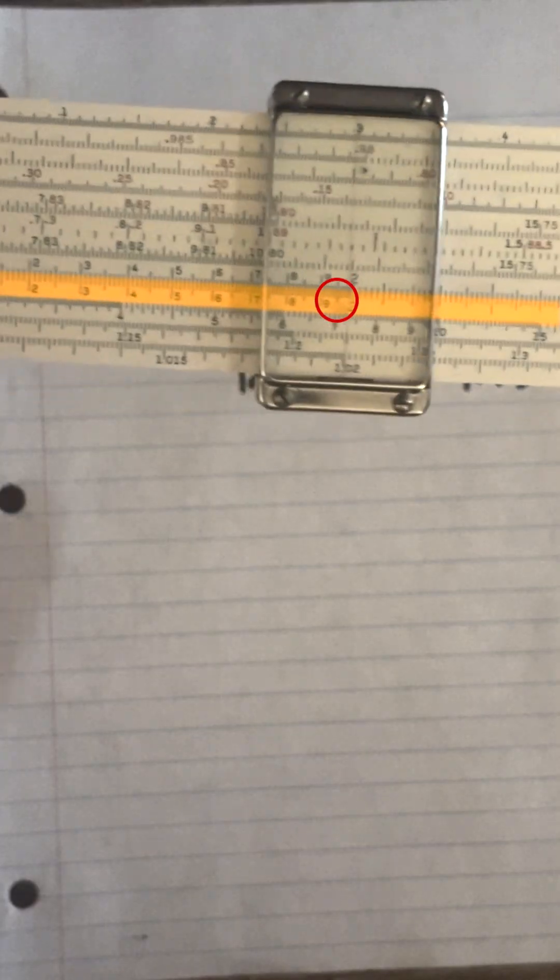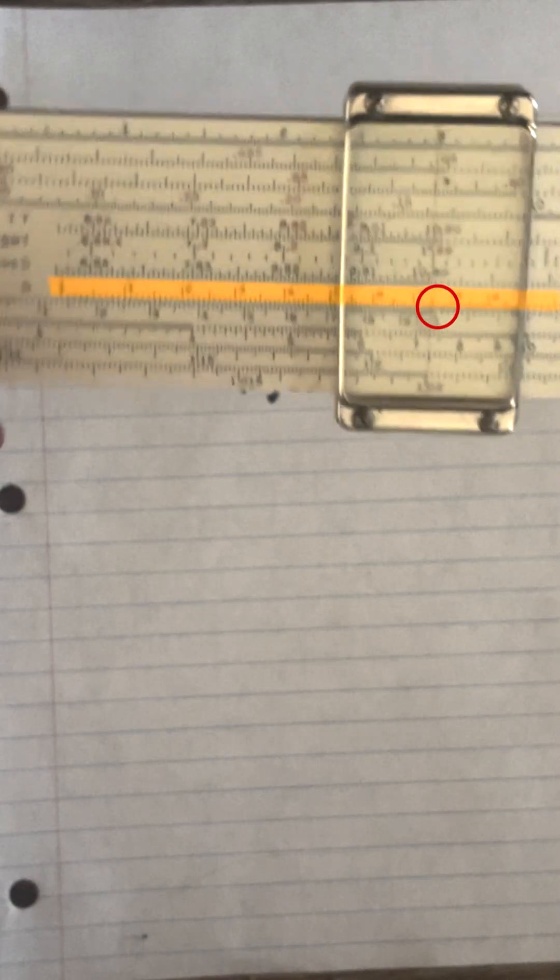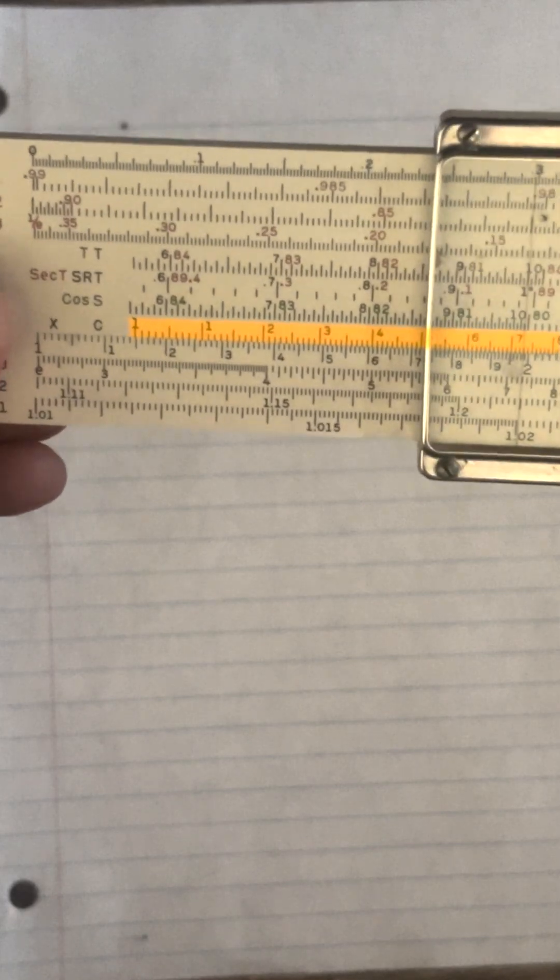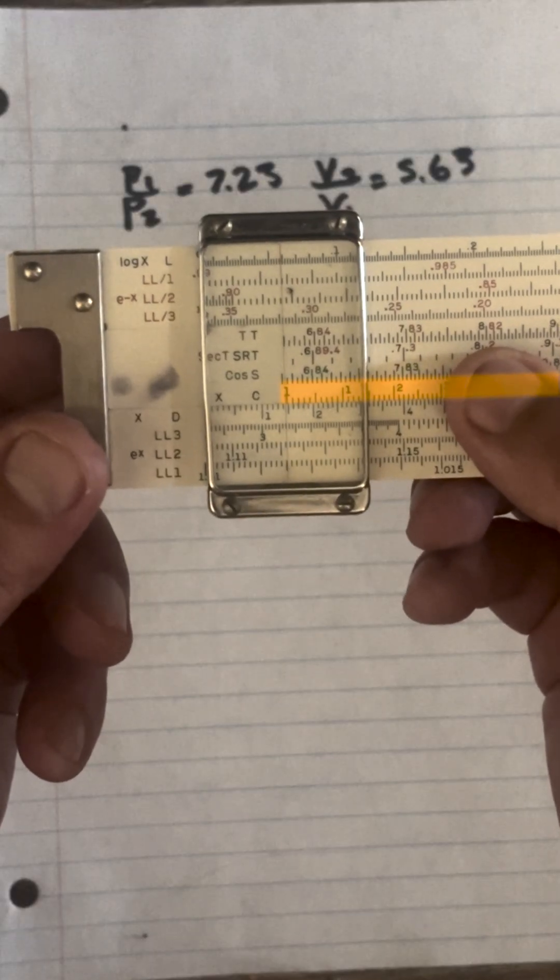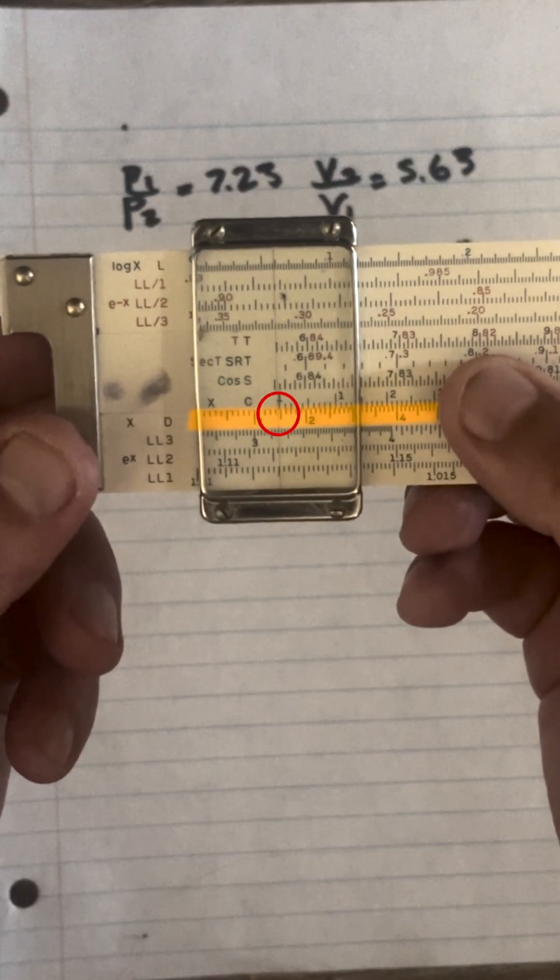We've already got 1.98 set to D, so all we have to do is move 1.73 on C over the top. Then we're going to move the slide over to the C index and we'll get 1.145 on the D scale. So n equals 1.145.